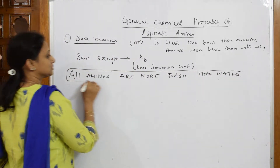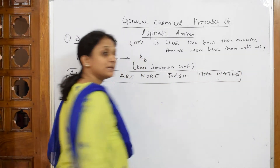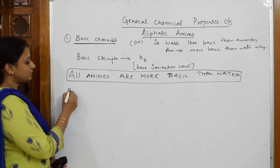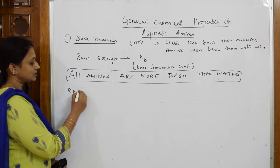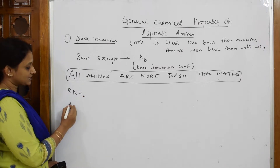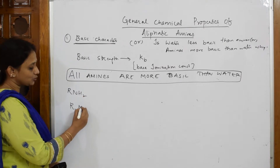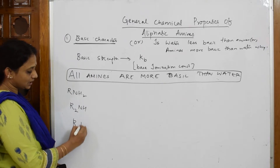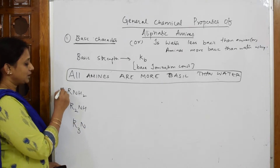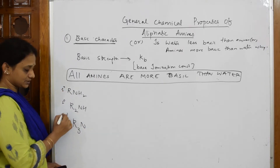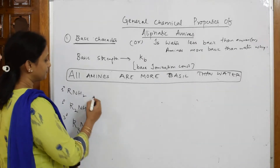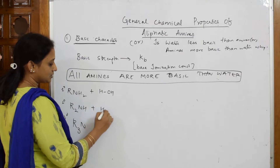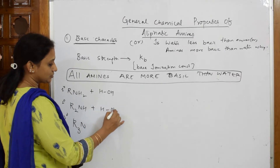Why are they basic? A primary amine has one alkyl group and two hydrogens; a secondary amine has two alkyl groups and one hydrogen; a tertiary amine has three alkyl groups. Now, suppose I try to dissolve these amines in water — I am also trying to dissolve water here.